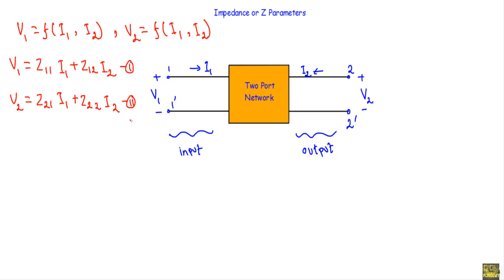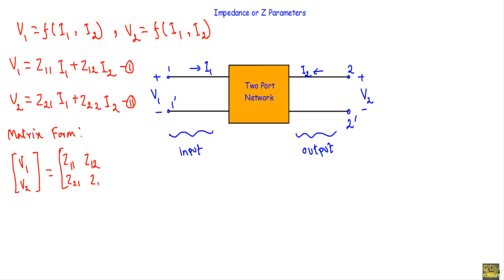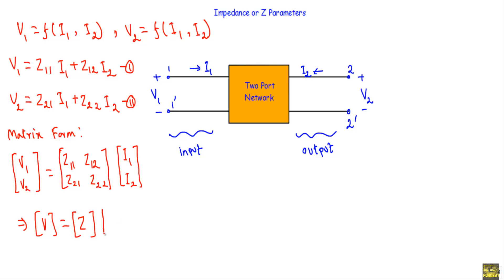We can express equation 1 and equation 2 in matrix form. The voltage matrix [V1, V2] is the product of the impedance matrix [Z11 Z12; Z21 Z22] and the current matrix [I1, I2]. In brief, we can write this as: [V] = [Z][I].